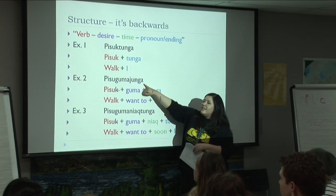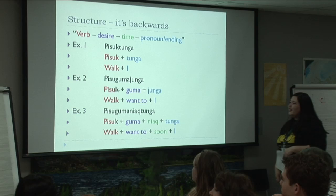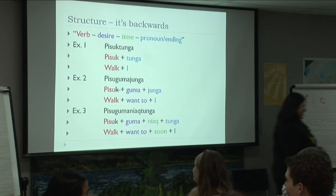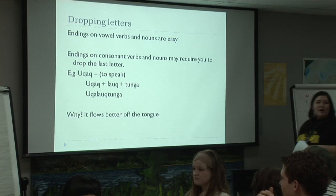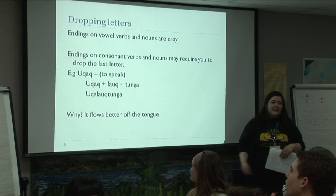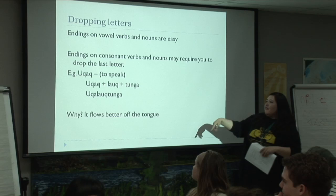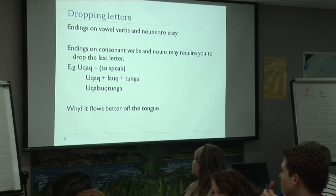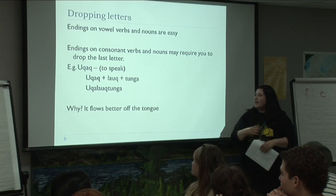Everyone try: pisukgumayunga. I want to walk, but I want to walk soon — pisukgumanyaktunga. We drop that consonant because it flows better and is easier on the ears. Ukalauktunga means you will want to speak, or you spoke in the past. This is my six months of learning Inuktitut, but I think I'm getting a pretty good grasp on it. Once you know the syllabics chart, it's a lot easier to figure out things phonetically, because it's all by ear — and you can trust your ear better than your eyes.